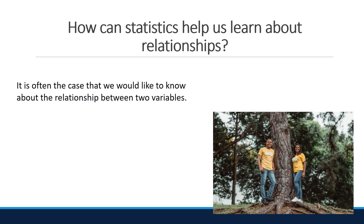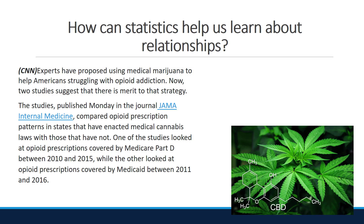Visit the health section of any major news outlet and you will find an article like this one: 'Marijuana legalization could help offset opioid epidemic, studies find.' Experts have proposed using medical marijuana to help Americans struggling with opioid addiction, and now two studies suggest there is merit to that strategy. The studies, published in the Journal of Internal Medicine, compared opioid prescription patterns in states that have enacted medical cannabis laws with those that have not. One study looked at opioid prescriptions covered by Medicare Part D between 2010 and 2015, while the other looked at prescriptions covered by Medicaid between 2011 and 2016.